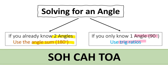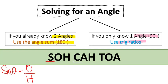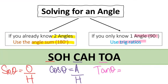Let's quickly review the trig ratios. We have SOHCAHTOA. Sine of theta equals opposite over hypotenuse. Cosine, or cos, of theta equals adjacent over hypotenuse. And tangent, tan of theta, equals opposite over adjacent.